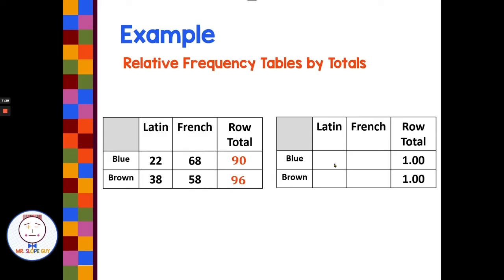Now I can find my relative frequency by taking each of these and dividing it by the row total. So 22 divided by 90 is going to give me 0.24 for my relative frequency table. And then I could do 68 divided by 90 to get 0.76. Now depending on rounding, this might come out to be 0.99 or 1.01. There might be a little bit of differentiation, but this one came out nice and pretty, perfect, 1.00.